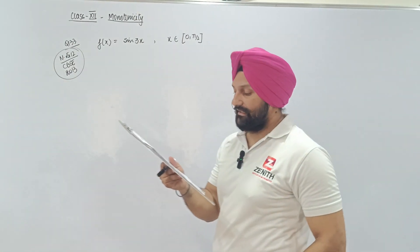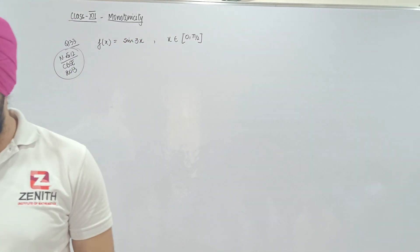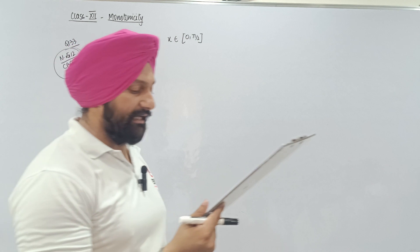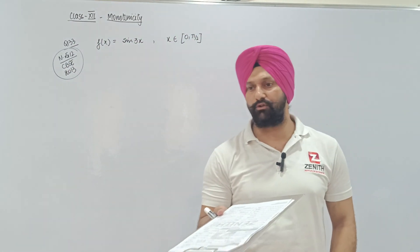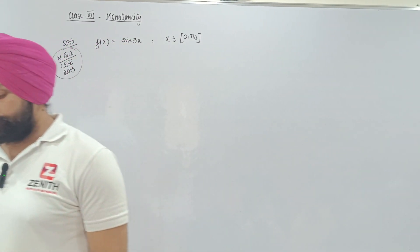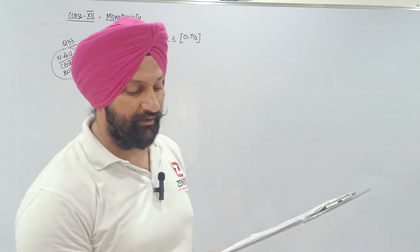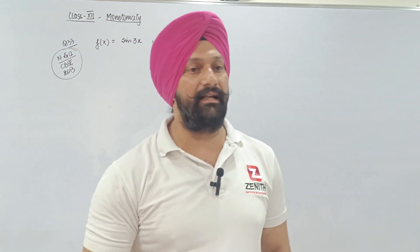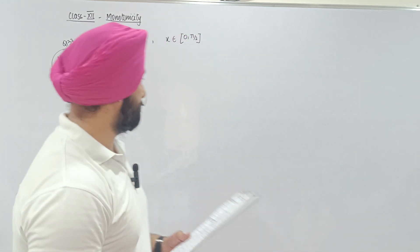Next question from NCERT, from the CBSE 2013 paper. f(x) equals sin(3x) and x belongs to 0 to π/2, means they are talking of first quadrant for x, not for 3x, okay? And find the intervals in which function is increasing and the intervals in which function is decreasing.